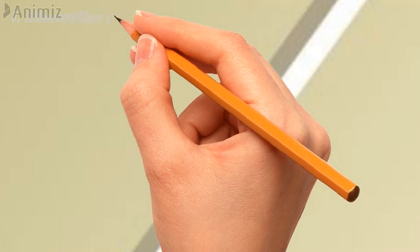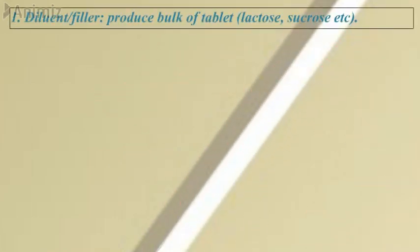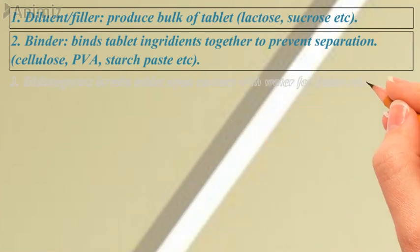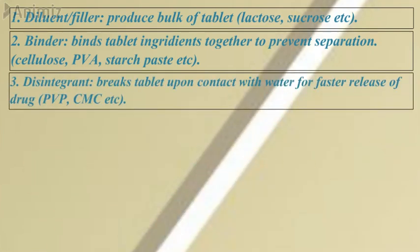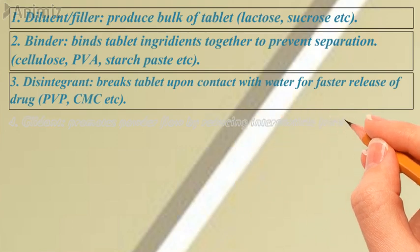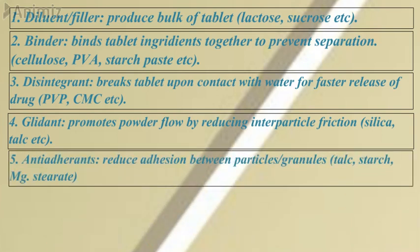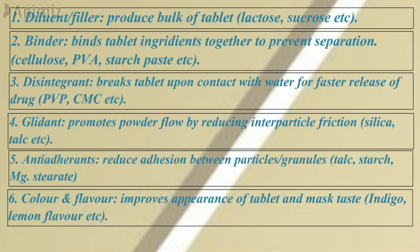First is the tablet dosage form. Diluents or fillers are added to produce the bulk of the tablet — examples are lactose and sucrose. Binders hold tablet ingredients together to avoid separation — examples are cellulose, PVA, and starch paste. Disintegrants break the tablet upon contact with water for faster drug release — examples are PVP and CMC. Glidants promote powder flow by reducing inter-particle friction — examples are silica and talc. Anti-adherants reduce adhesion between particles or granules — examples are talc, starch, and magnesium stearate. Colors and flavors improve appearance and mask bitter taste — examples are indigo and lemon flavor.